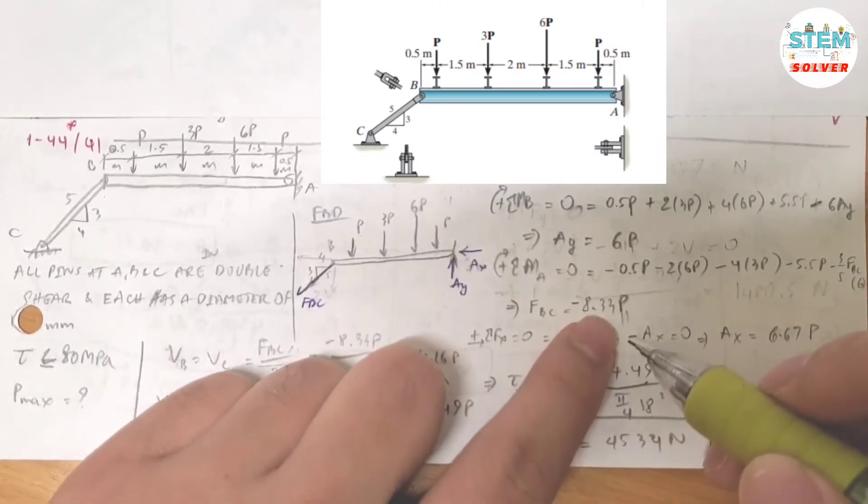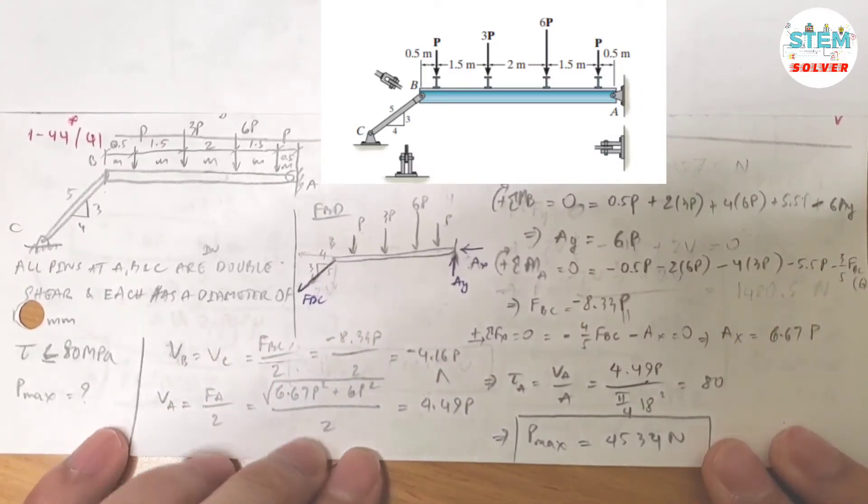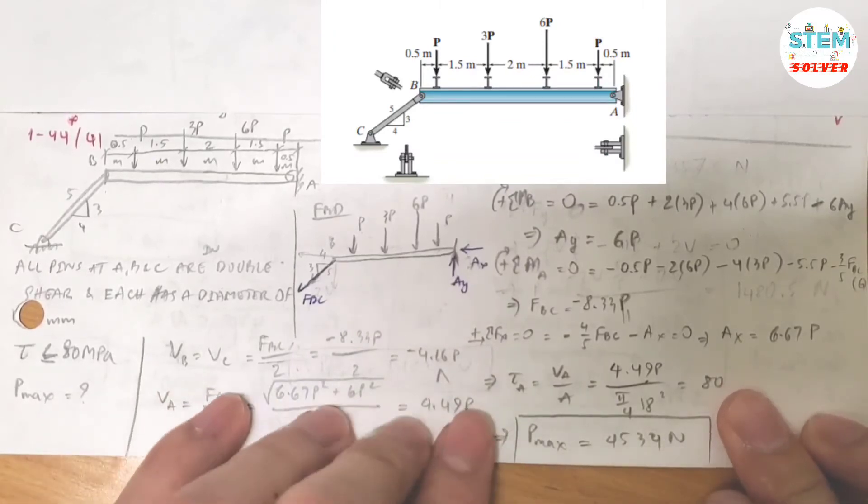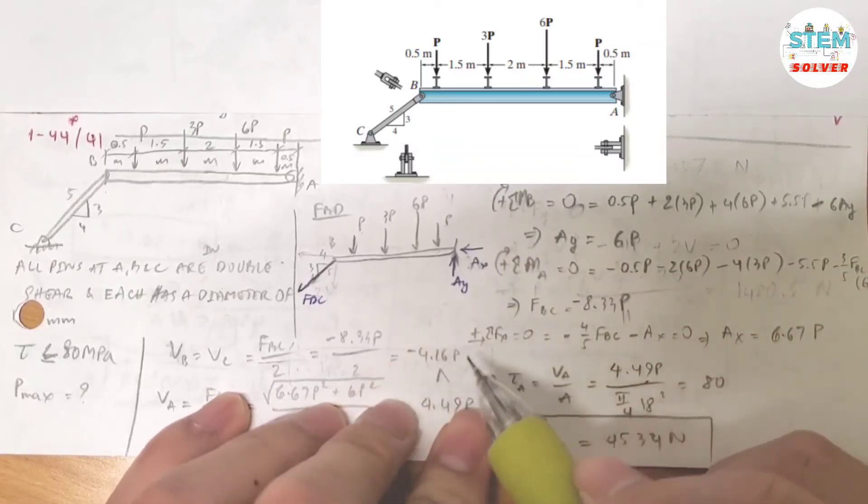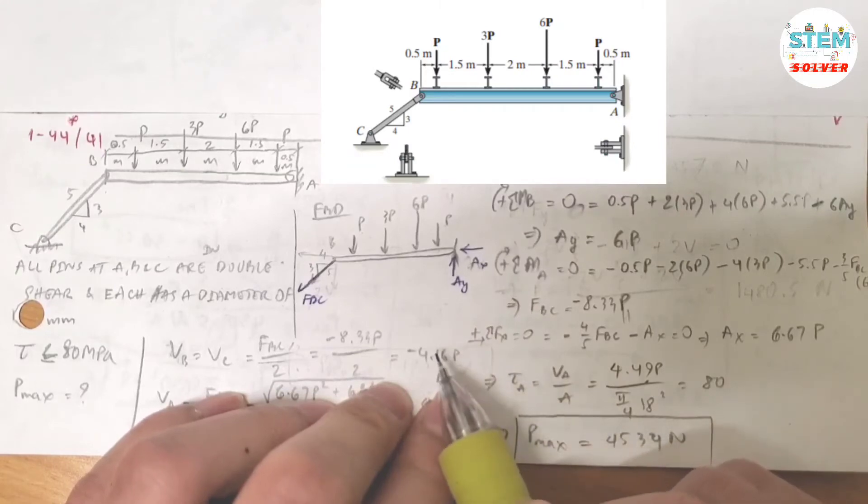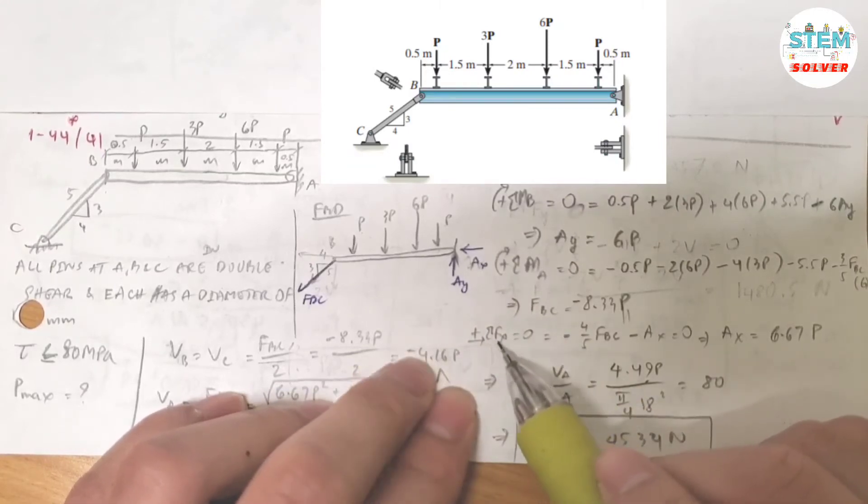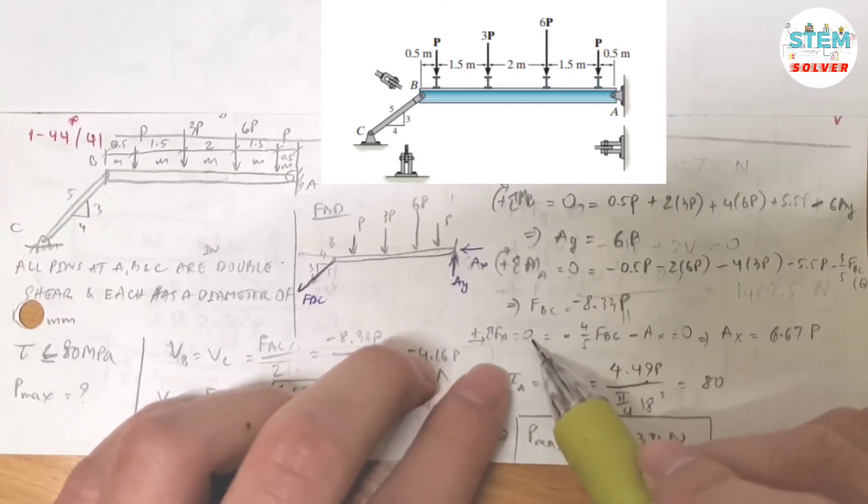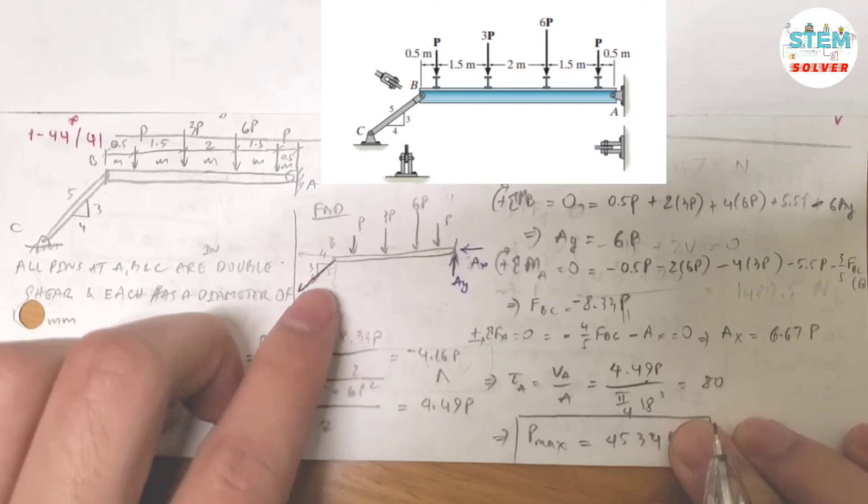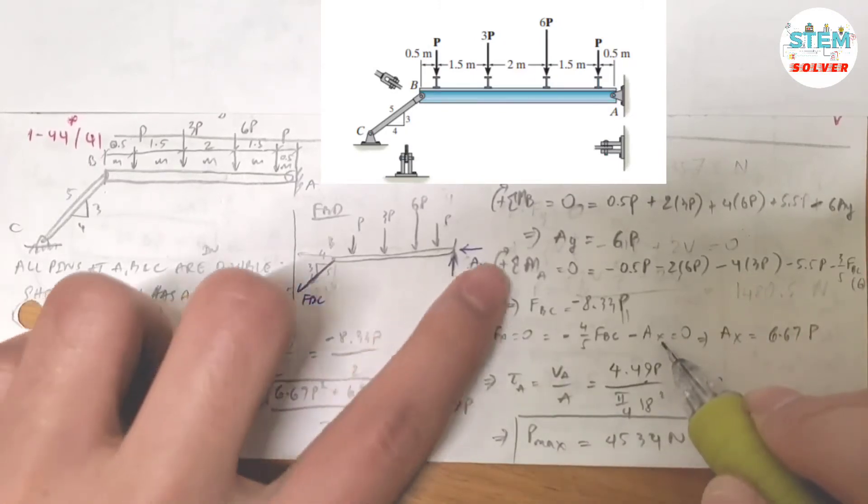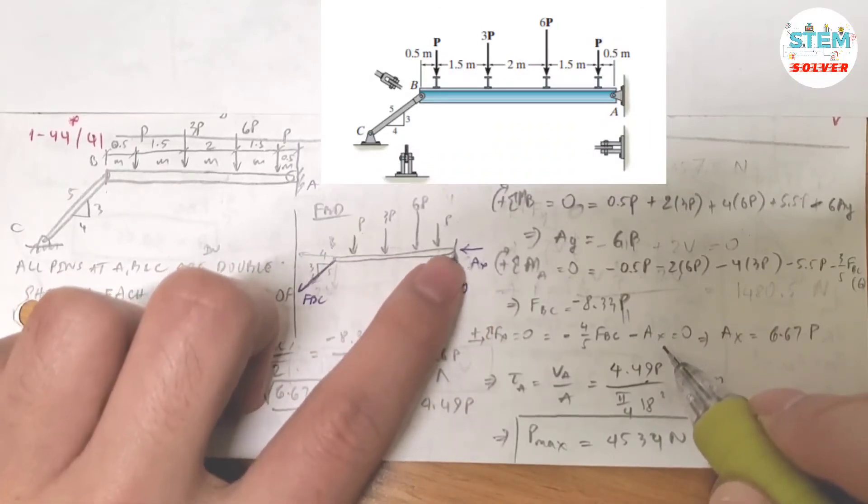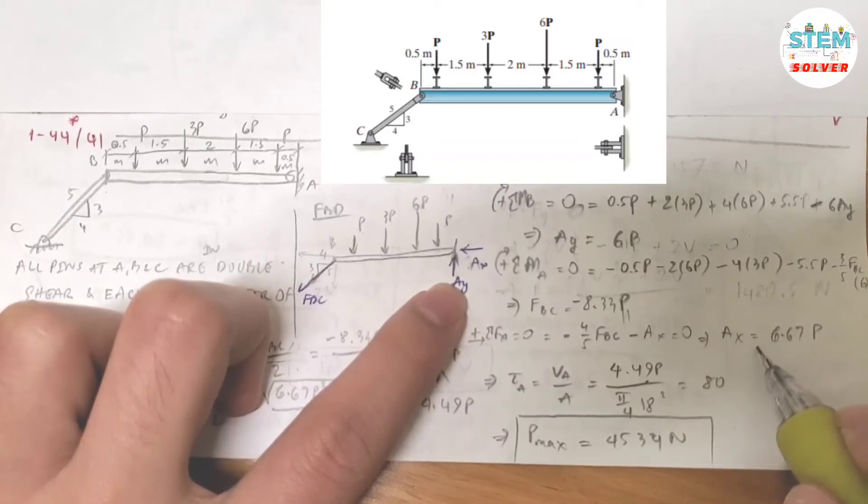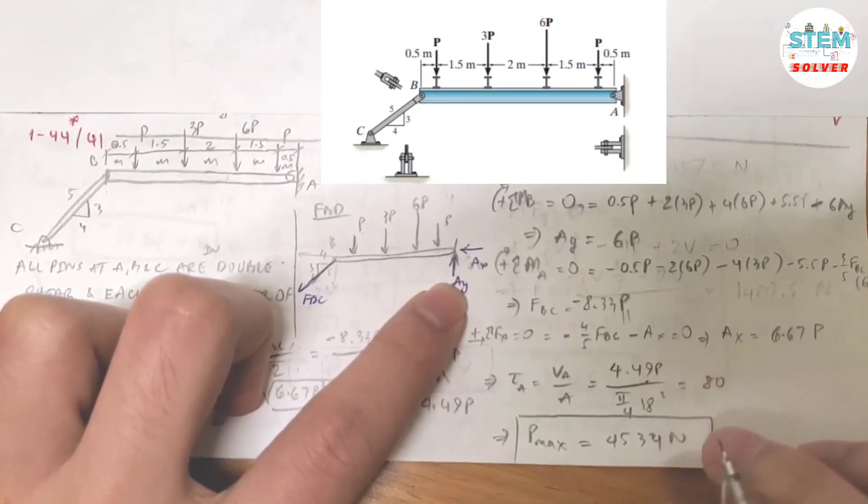Now all the forces are expressed in terms of P. Let's find AX. Summation of forces in the X direction equals 0. I have negative 4 over 5 FBC minus AX because I assume to the left is negative. So I found AX equals 6.67P because you just found FBC, you plug it in here and then you solve for AX. I got this one, of course in terms of P.